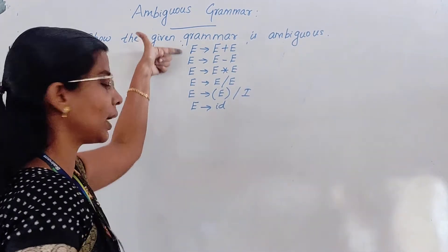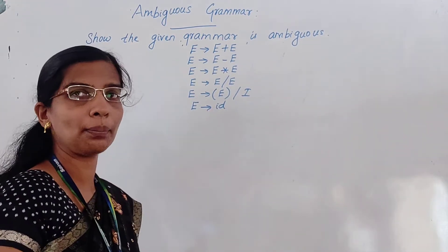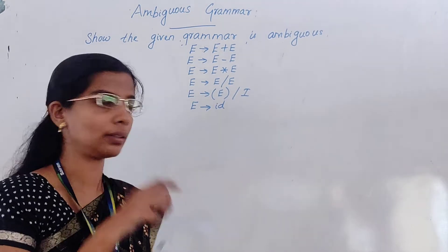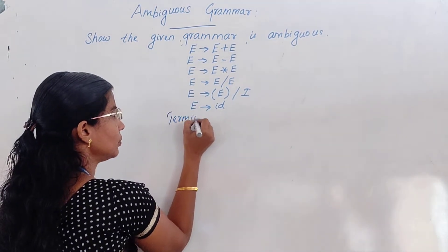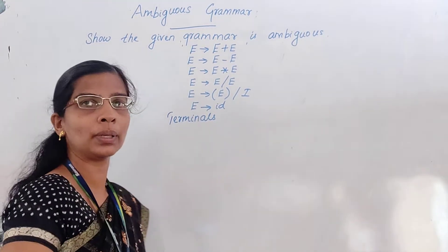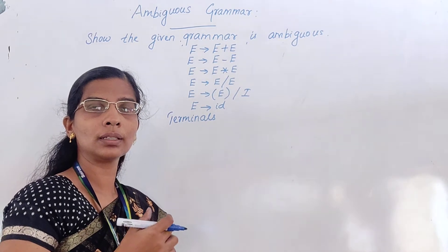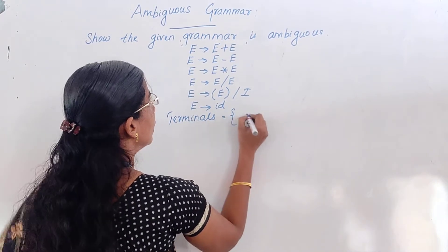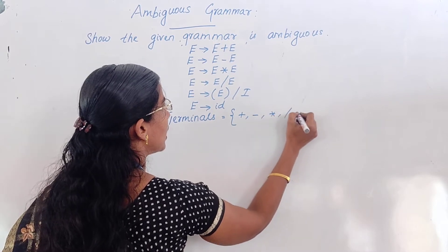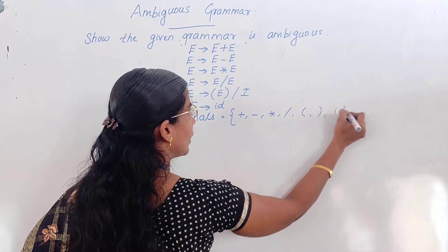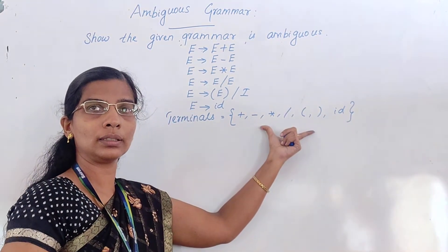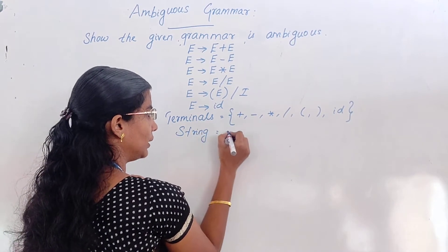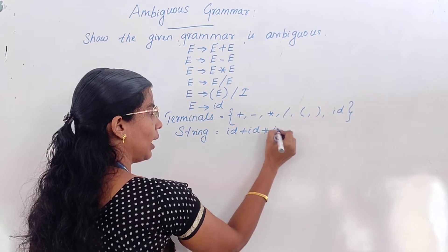So we can see this example. I have taken this grammar and we will see whether the given grammar is ambiguous or not. What I should do first is look at the grammar and pick all the terminals and write. So what are the terminals? You know terminals are lowercase letters, digits, symbols, operators. Identify all terminals: plus, minus, star, slash, open parenthesis, closed parenthesis. Use these terminals and generate your own string. I am forming the string ID plus ID star ID.